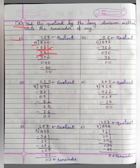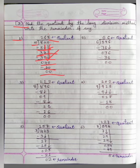5 sixes are 30. So 34 minus 30 is equal to 4. And again we will bring down this 0 here, so now we have 40. 5 eights are 40, and 40 minus 40 is equal to 0. So our quotient is 168.